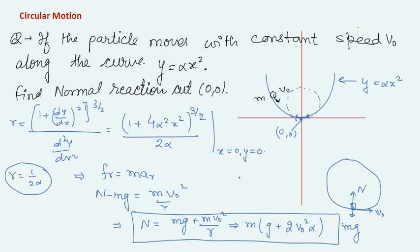That was how to calculate the radius of curvature and apply it to a circular motion problem. To summarize: in circular motion, always resolve forces, write the radial equation of motion, and proceed from there. In the next lecture we will deal with extended object circular motion — circulating a rod or a sphere — and study their dynamics. Please subscribe to the channel for latest updates. Thank you, all the best.